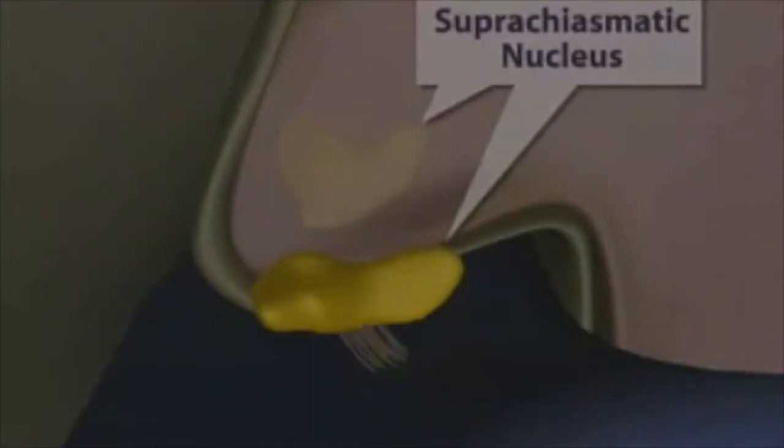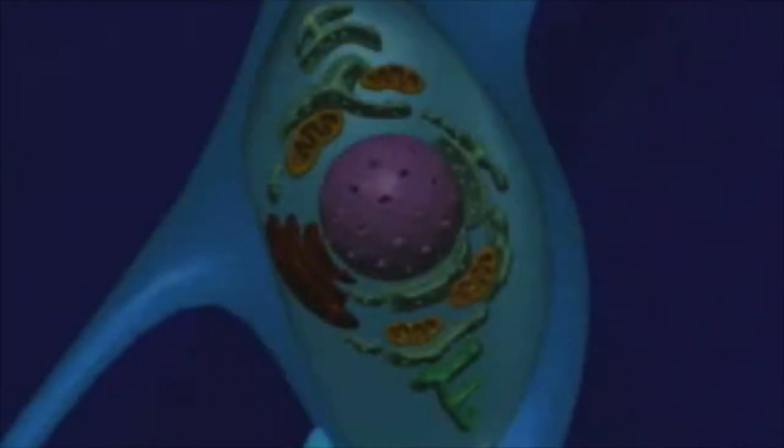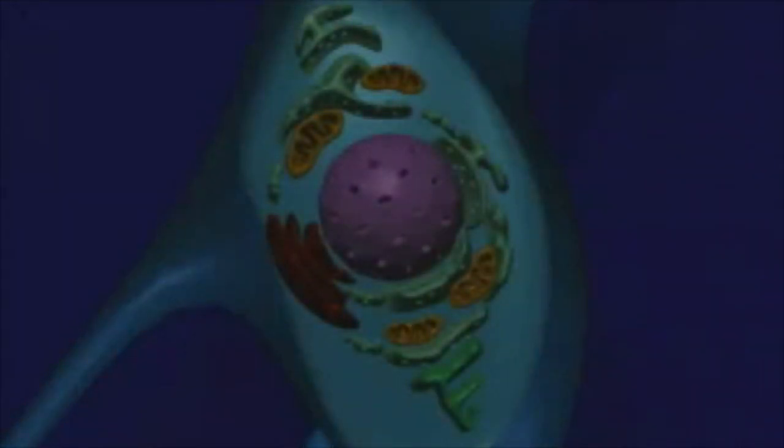The hypothalamus contains the suprachiasmatic nucleus, also called the SCN. This structure acts as a biological clock for humans. The suprachiasmatic nucleus is composed of several thousand neurons that fire with the circadian rhythm. Experiments with isolated SCN neurons reveal that these clocks are actually cellular clocks. Each SCN cell acts individually and synchronizes with the activity of neighboring SCN cells.